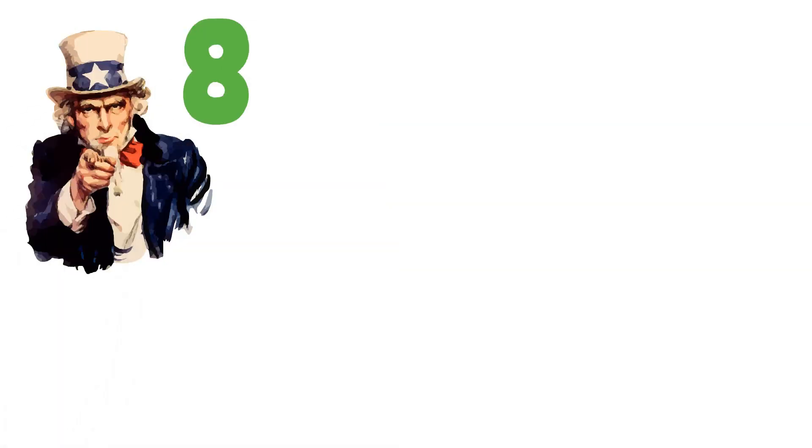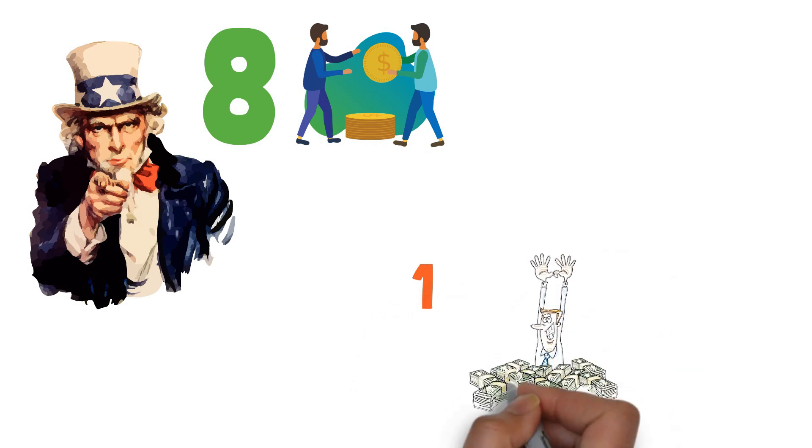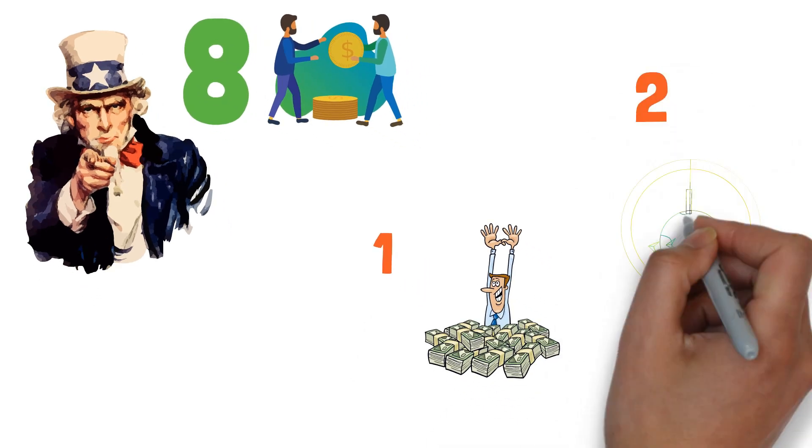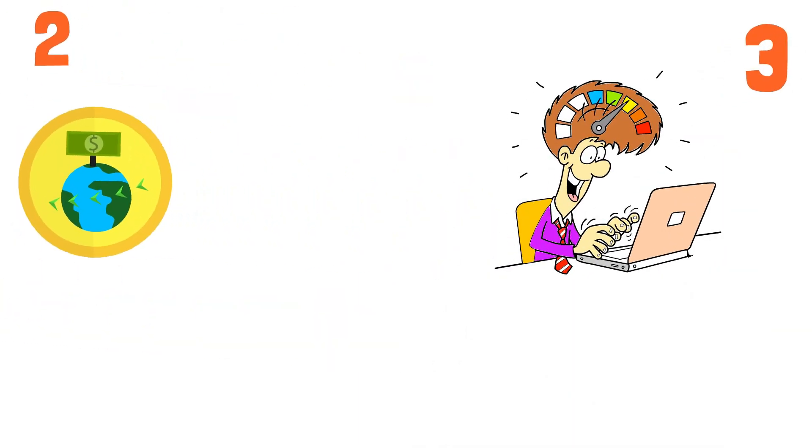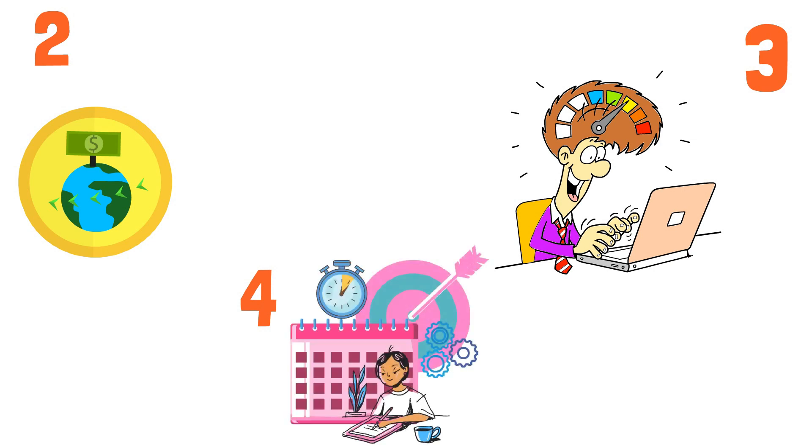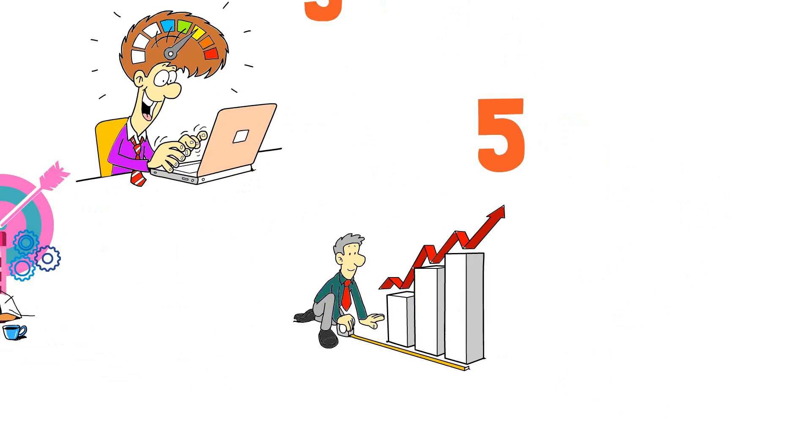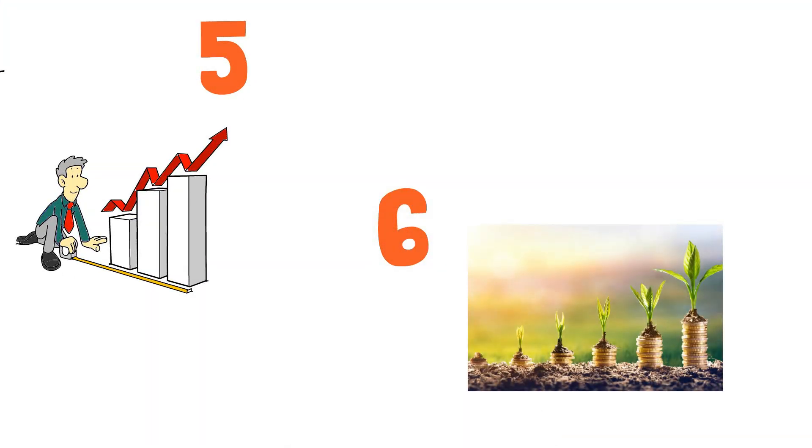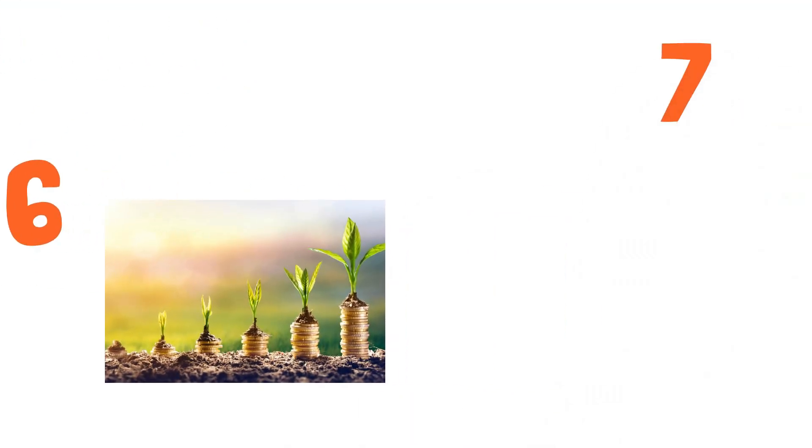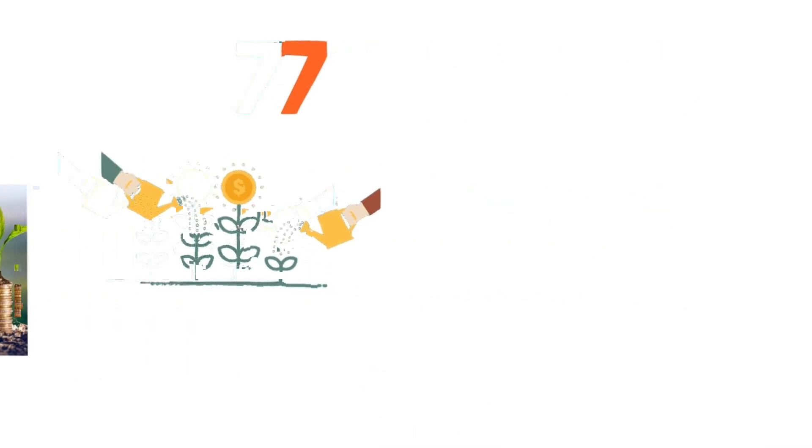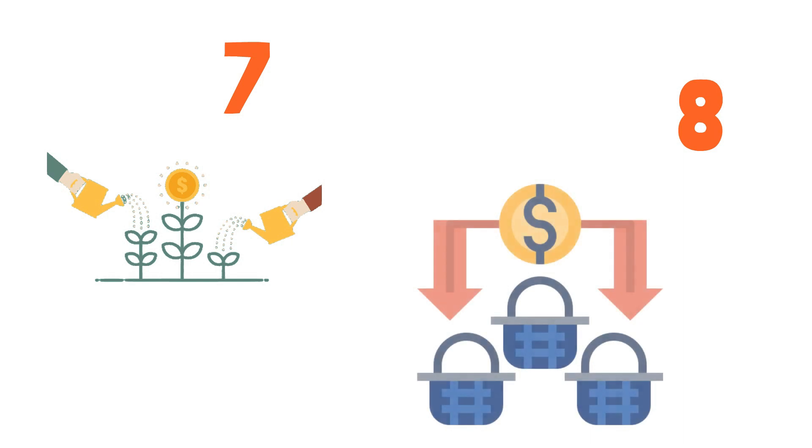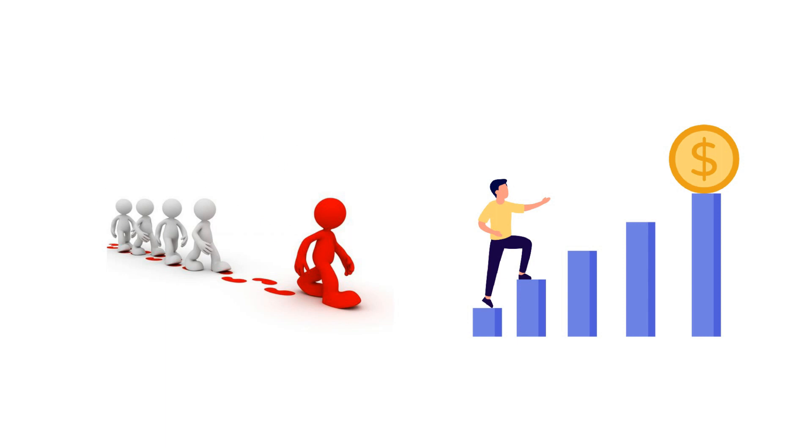So in this video, we've covered eight money rules that the wealthy live by. Number one, avoid unnecessary spending. Number two, use debt wisely to build wealth. Number three, combine hard work with smart choices. Number four, make efficient use of your time. Number five, prioritize long-term financial planning. Number six, invest to counteract inflation. Number seven, save and invest before spending. And number eight, diversify your income sources. Adopting these principles can set you on a path to financial success.